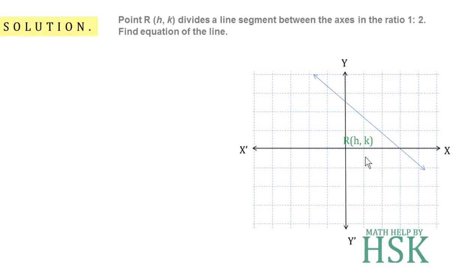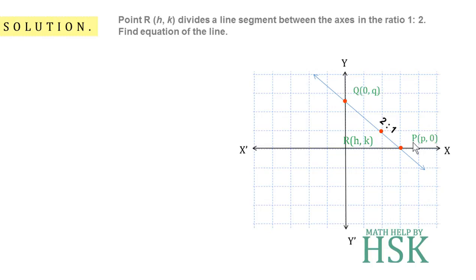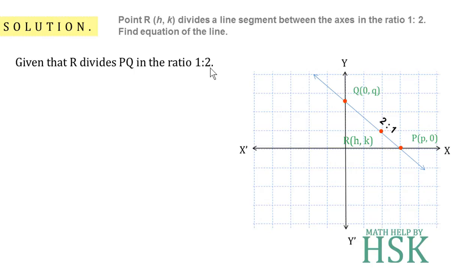Point R, which is equal to h,k, is located here. Because the ratio is 1 is to 2 — 1 here and 2 here — so we read it as 2 is to 1 from this side. The point Q, one end of the segment, has the coordinate (0, q) and the other end has the coordinate (p, 0), represented as capital P and capital Q. Given that R divides PQ in the ratio 1 is to 2.